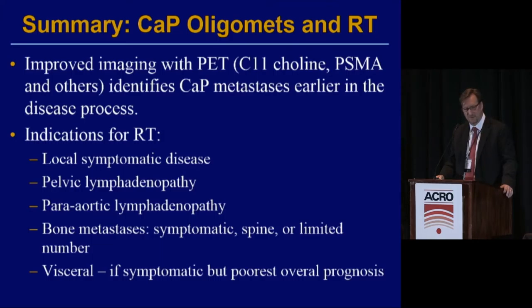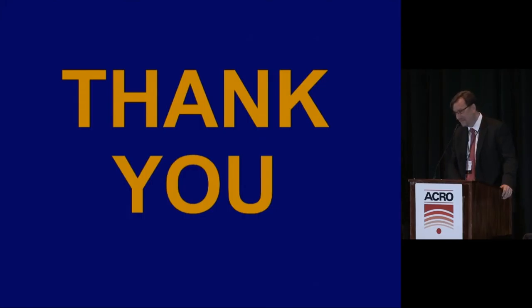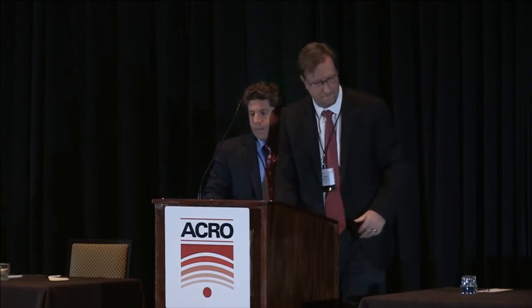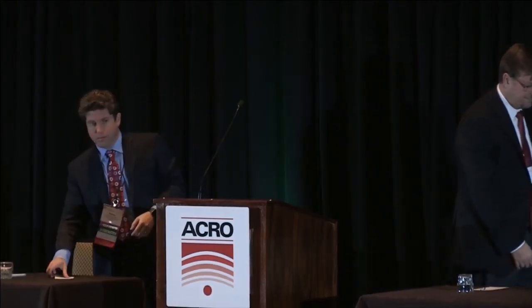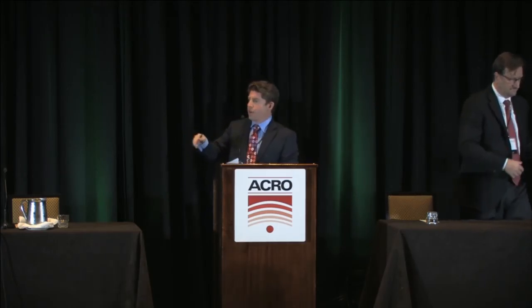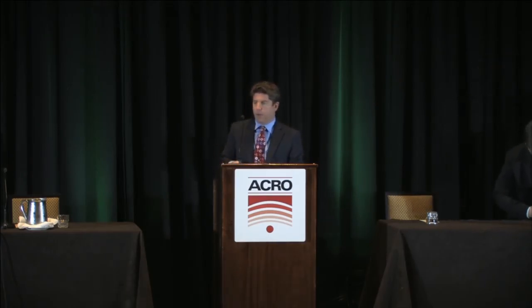To review indications for radiation therapy in oligometastatic prostate cancer: local symptomatic disease and pelvic lymphadenopathy are relatively straightforward. Para-aortic lymphadenopathy, symptomatic bone metastasis, and spine or a limited number of asymptomatic bone metastases are supported by data. Visceral metastasis has the poorest prognosis and most limited data. When a PET scan shows mediastinal involvement, for example, that presents particular challenges. Our approach combines fractionated treatment for lymph node stations while using SBRT for bone metastasis adjacent to lymph node sites.